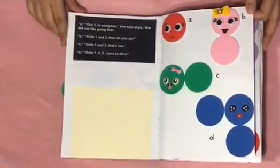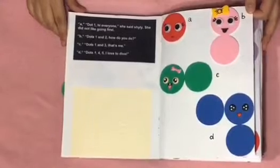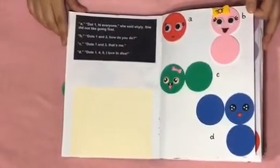A dot one. Hi everyone, she said shyly. She did not like going first. B dots one and two. How do you do? C dots one and three. That's me. D dots one, four, five. I love to dive. Here's red Little A, pink Little B with a yellow bow, green Little C with a pink bow, and blue Little D.